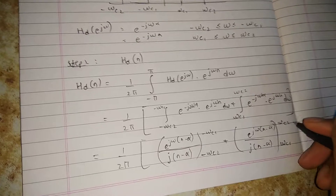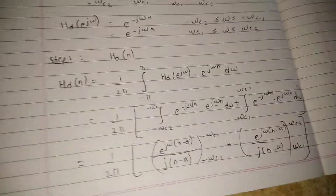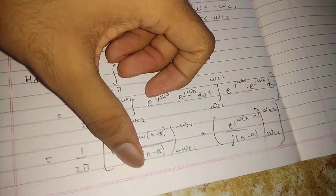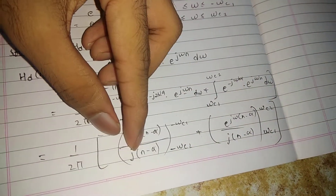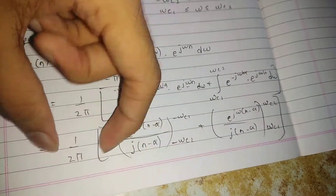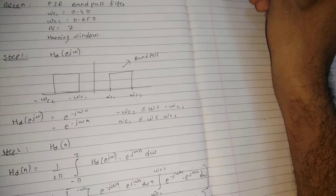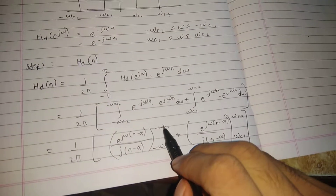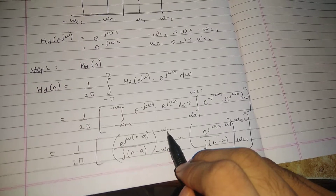After writing these two integrals, substitute the upper and lower limits. Note that j(n − α) is common in both terms, so take j(n − α) outside the brackets. Write (1/2π) × (1/j(n−α)) outside, then substitute the upper limit first: put −ωc1 in place of ω.